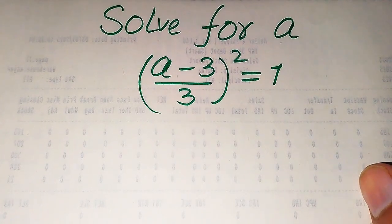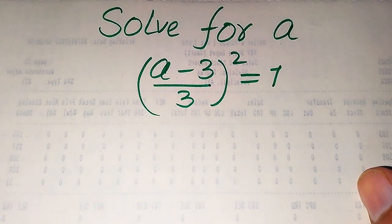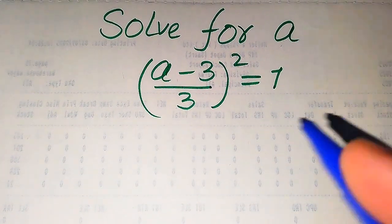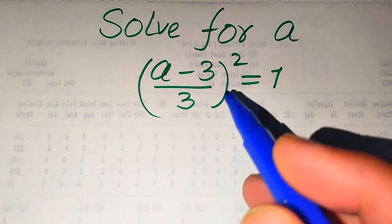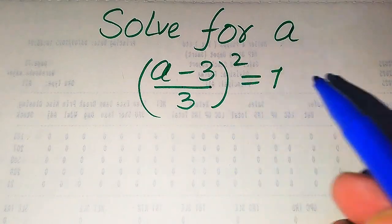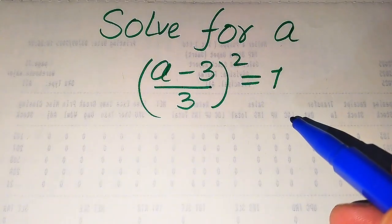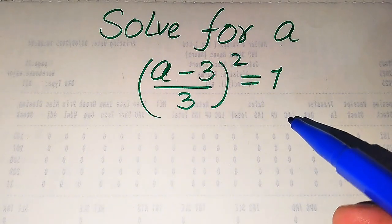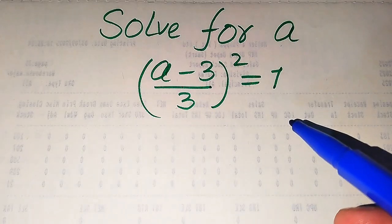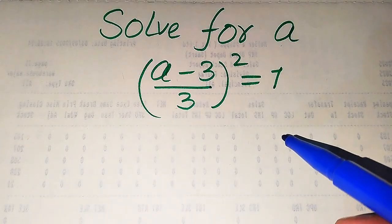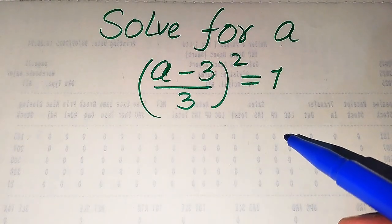Hello everyone. How to solve this problem for the values of a, if we have (a minus 3) divided by 3, and its whole square equals 1, and we solve this problem for all the values of a. First we find all the roots of this equation, and at the end we will verify which of the roots are solutions and which are extraneous roots.